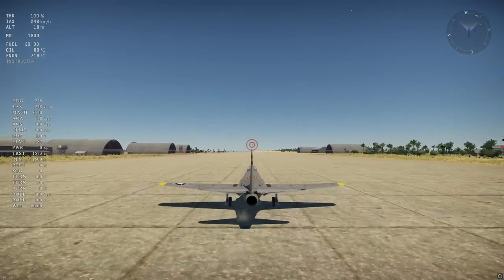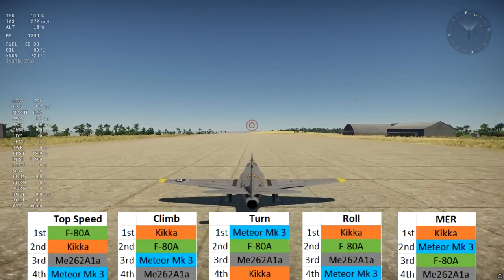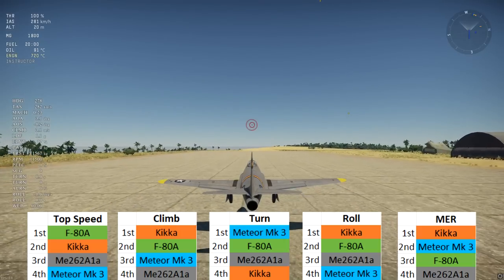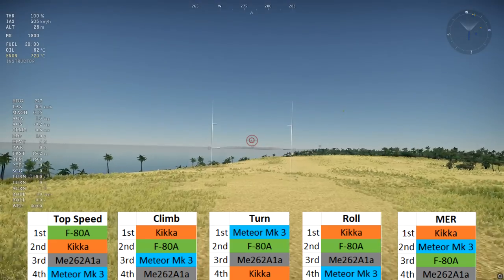So to recap, here are the rankings for each of the five performance metrics. The Kika and the F-80 find themselves near the top of the rankings, while the ME262 is in the bottom half of every ranking.